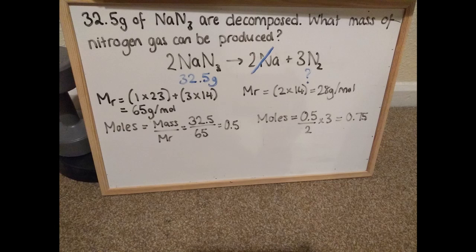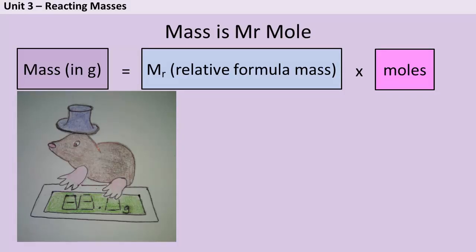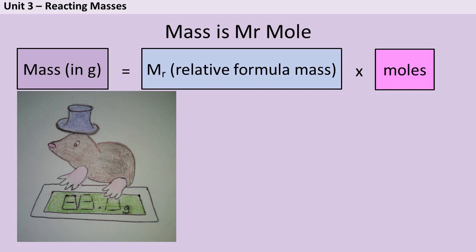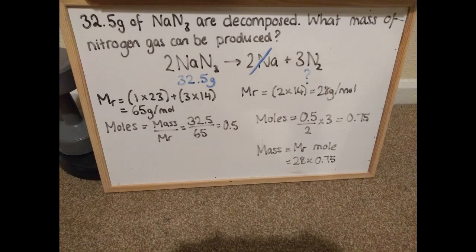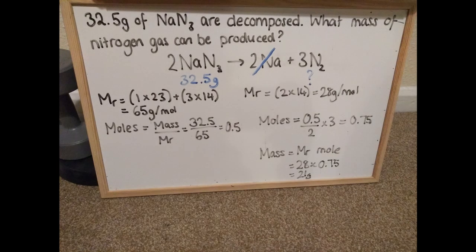So at this point I've got most of the marks in the question. But to finish off, I need to know what the mass of that nitrogen is. Well, if we come back to our equation that mass is MR × mole, mass is MR times the number of moles. 0.75 is the number of moles. So what's the MR? Well, I've already worked that out up here. It's 28. So 28 times by 0.75 gives me a final mass of 21. And then because it's a mass, I obviously want to put some units after it. And the units are grams. So 32.5 grams of sodium azide makes 21 grams of nitrogen gas.